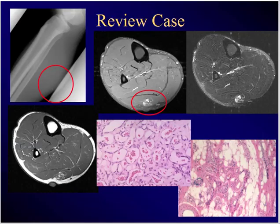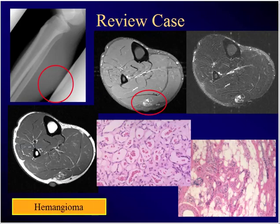Calf pain associated with activity with this MR sequence and this histology. What's the diagnosis? Hemangioma. Remember T1 — there it is. On T2 it's bright. And a little bit of mineralization there. Hemangioma.